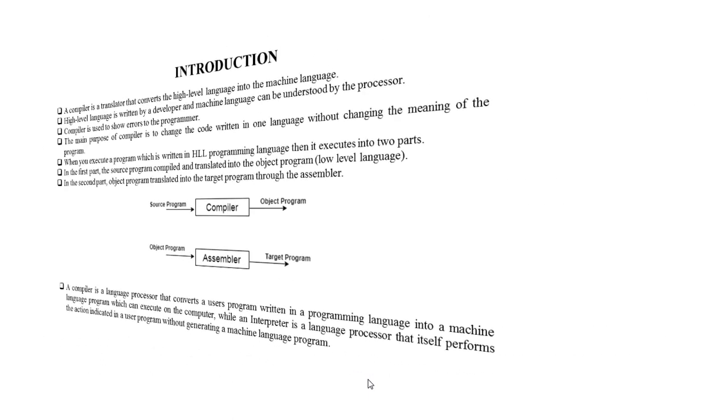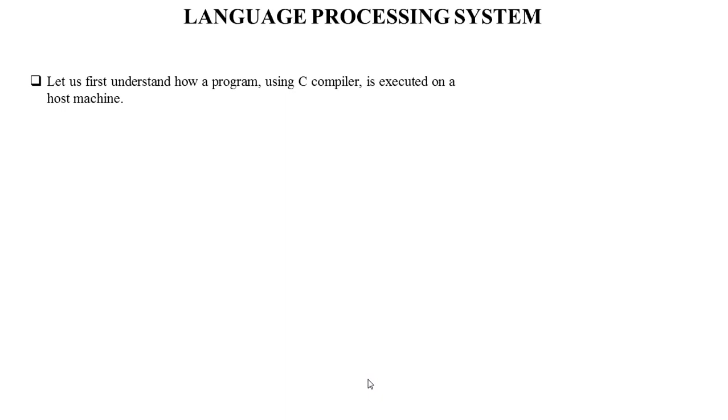Any computer system is made up of hardware and software. The hardware understands a language which humans cannot understand, so we write programs in high-level language which is easier for us to understand and remember. These programs are then fed into a series of tools and operating system components to get the desired code that can be used by the machine. This is known as a language processing system.